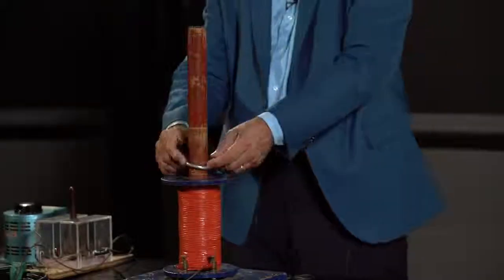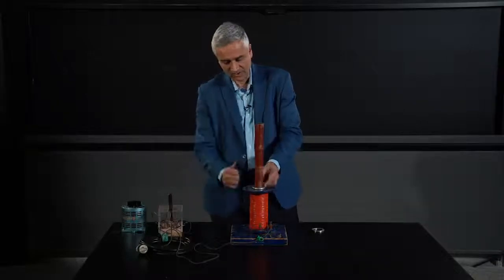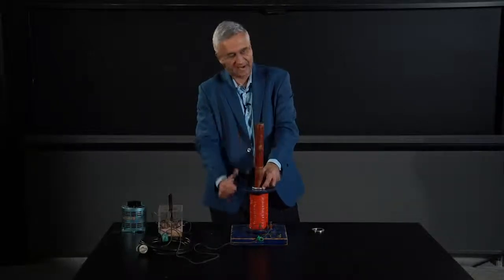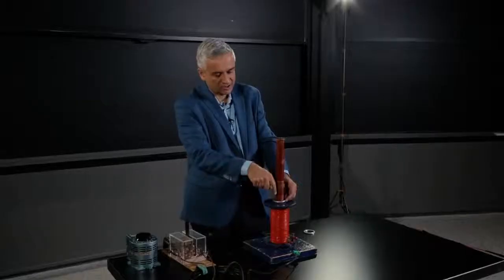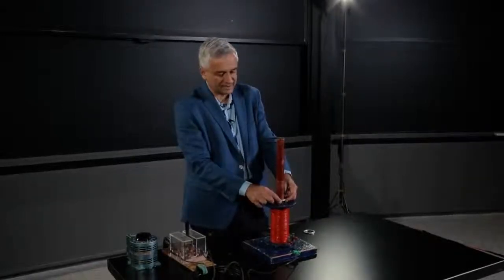That changes the magnetic flux through this ring. Right now, there's no flux through it. When I turn it on, there's a big flux going through it. I change the flux through this ring. That induces a current in the ring, and now the ring itself is a little magnetic dipole.